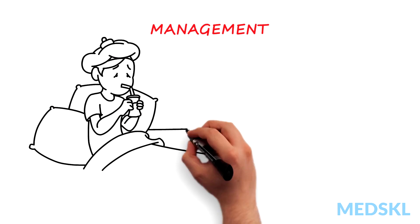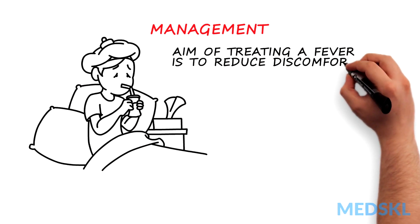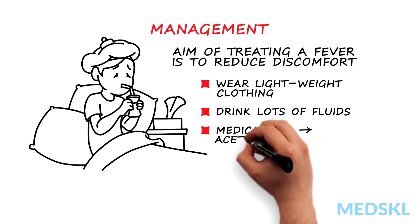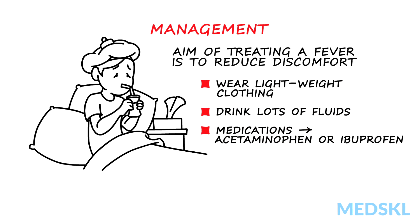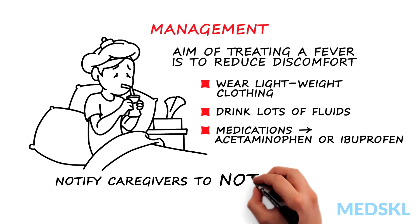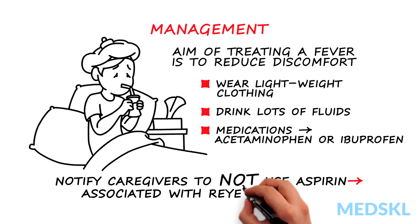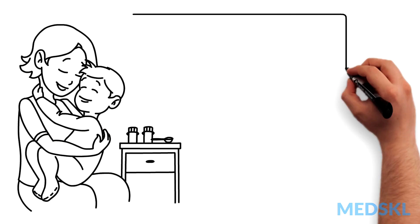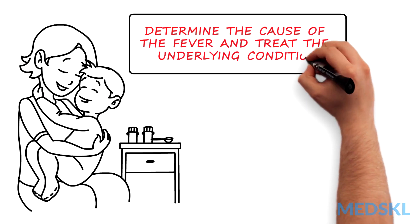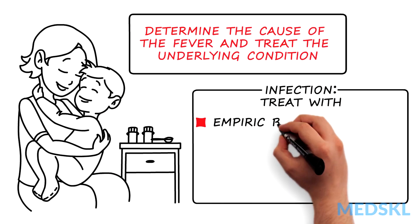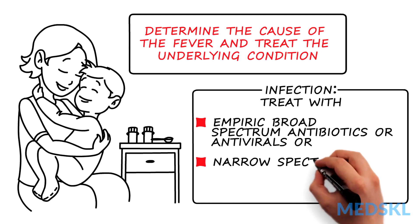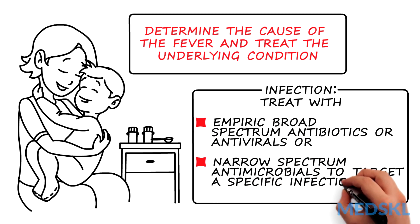The main reason for treating a fever is to reduce discomfort in the child. Children should wear lightweight clothing and drink lots of fluids. Medications such as acetaminophen or ibuprofen will help keep the child comfortable and reduce any associated pain. Caregivers should be notified not to use aspirin because of its association with Reye syndrome. It is important to determine the cause of the fever and treat the underlying condition. In the case of infection, management may include empiric broad-spectrum antibiotics or antivirals, or narrow-spectrum antimicrobials to target a specific infection.